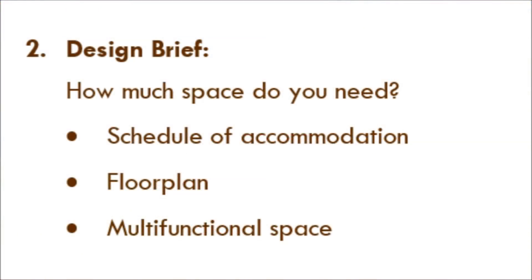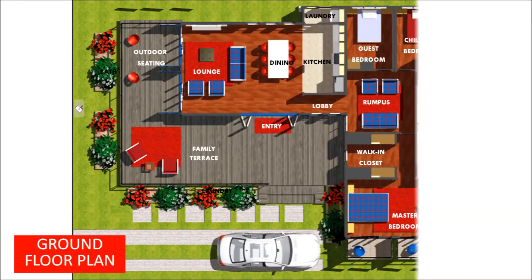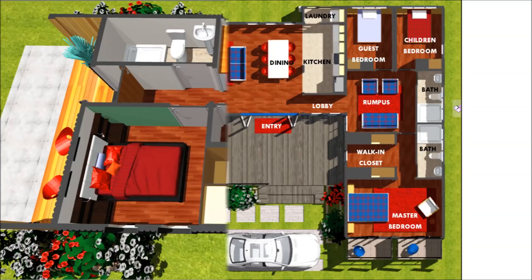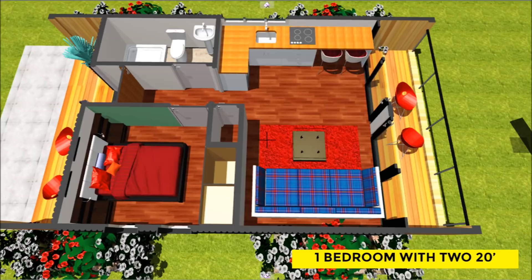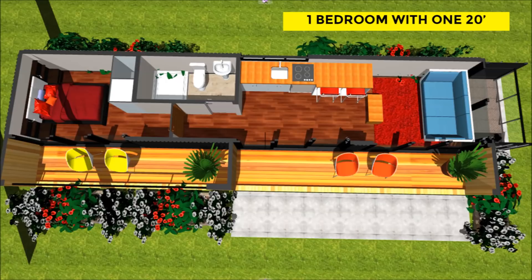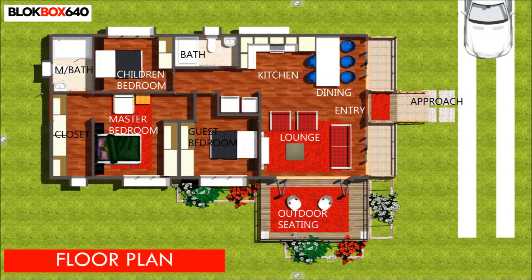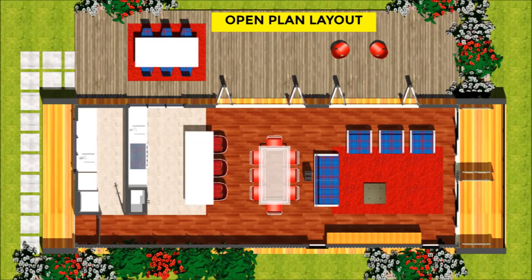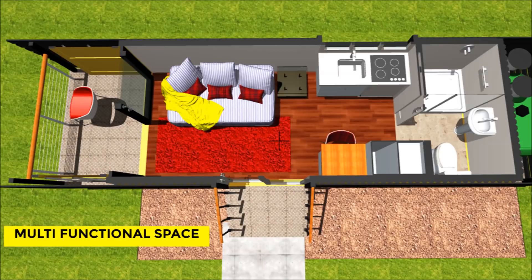The second thing to consider when designing a shipping container house is the design brief — how much space do you need? For example, this first plan is designed using two 20-foot shipping containers and accommodates a fully functional one-bedroom unit. On the second plan we've used a single 40-foot shipping container and also managed to accommodate a one-bedroom house. The type of plan you use will depend on your specific requirements. You will also decide if you need an open plan layout, and whether you need multifunctional spaces, especially if you are designing a studio cabin or a container cottage.